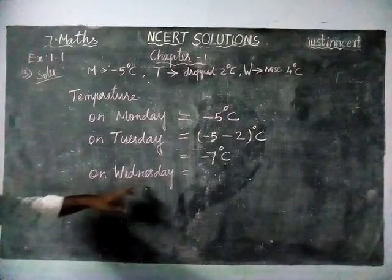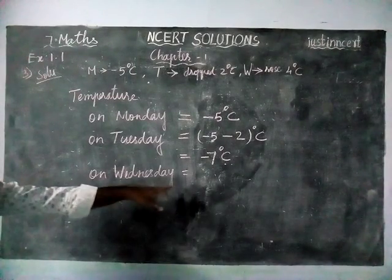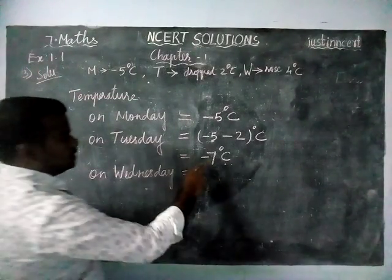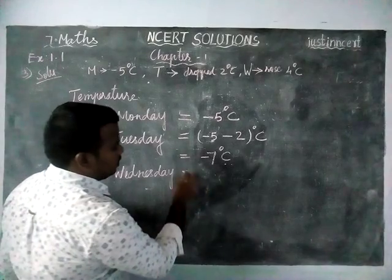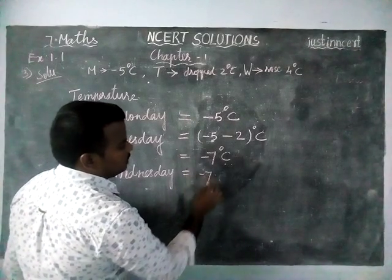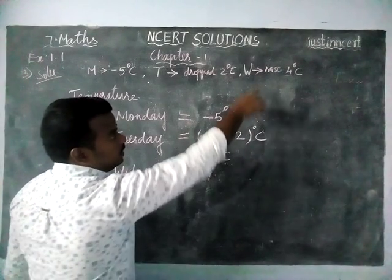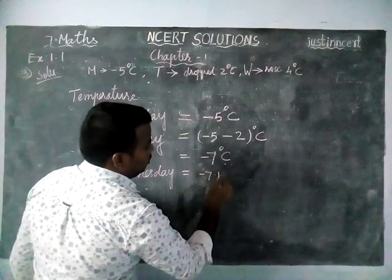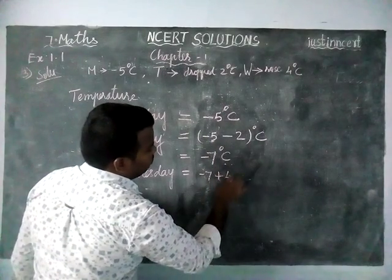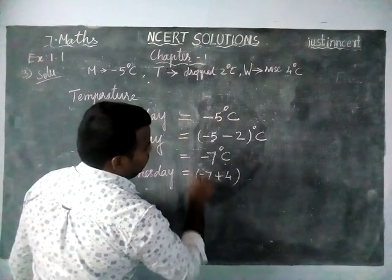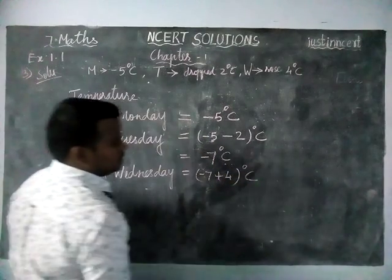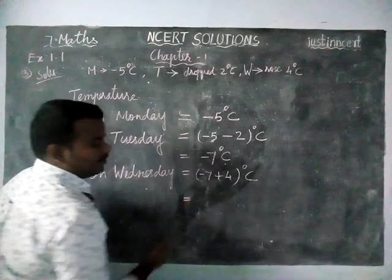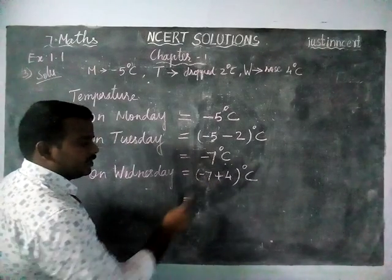And on Wednesday it rose by 4 degrees Celsius. So from Tuesday's temperature of minus 7, it rose. So we have to add plus 4 degrees Celsius. Both signs are different, so we have to find the difference.